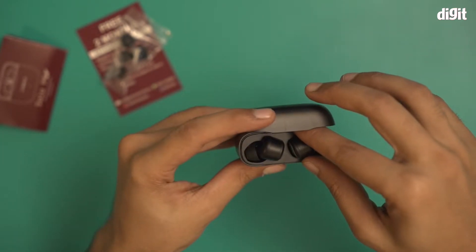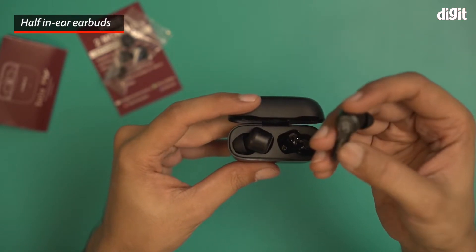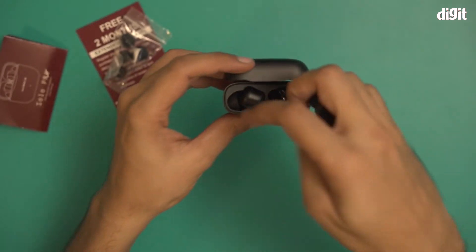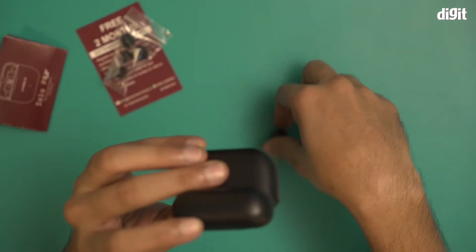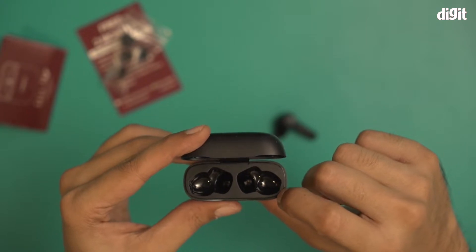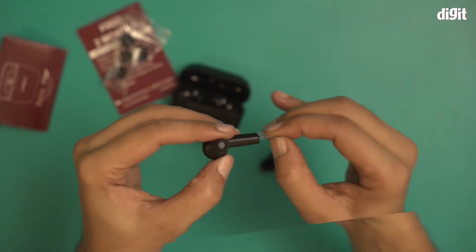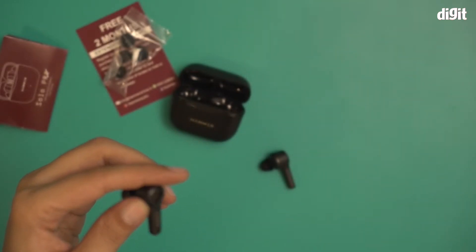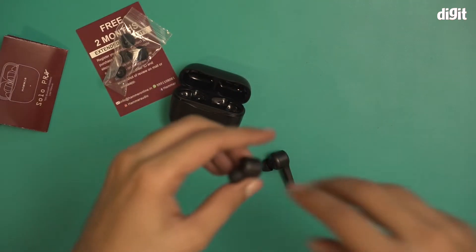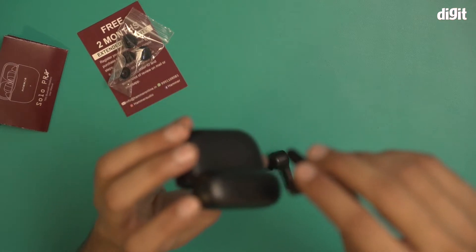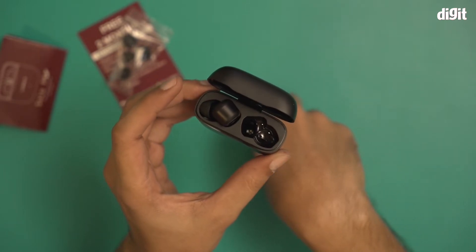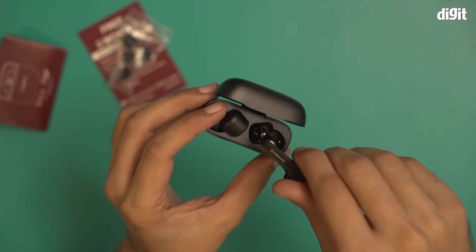Notice that these have magnetic charging links inside. The stickers are preventing these particular earbuds from getting discharged. Now when I put them back in, they should stick like that because these are connecting to a pair of magnetic charging pins. Same should happen here. That's it.